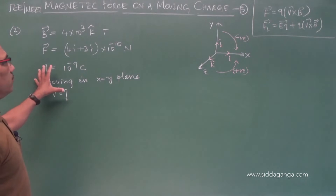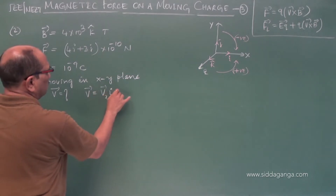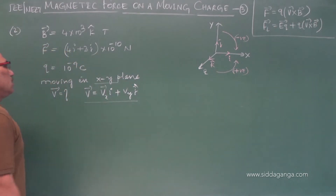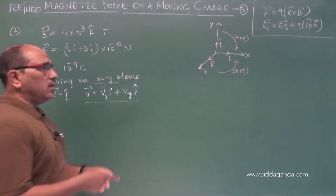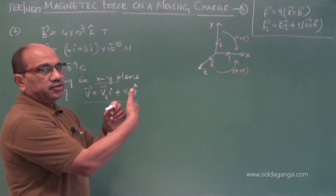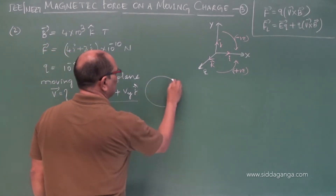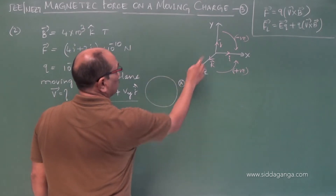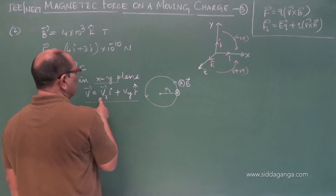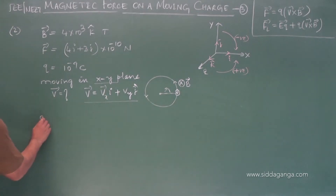When you look at this question, the velocity components can exist in X and Y since the charge is in the XY plane and B is along Z. When the charge enters perpendicular to the magnetic field, it describes a circle perpendicular to the plane containing B. So the velocity components are Vx·I and Vy·J. We are given the charge, magnetic field, and force, so we use the equation F = Q(V × B).